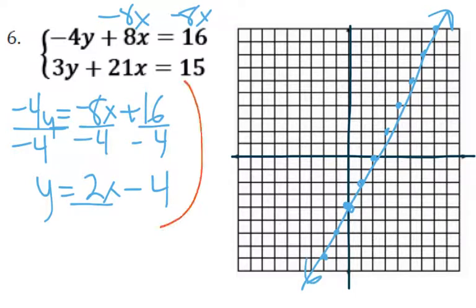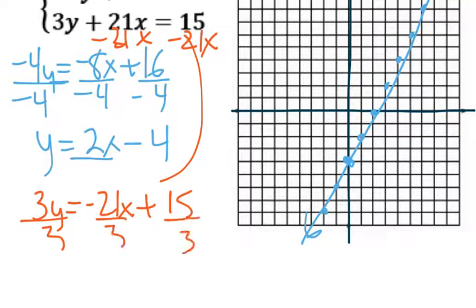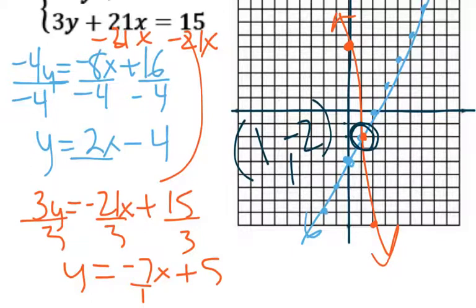There's my line. Second equation: subtract 21x, so 3y = -21x + 15. Divide by 3, and we get y = -7x + 5. So y-intercept of 5, then negative 7 over 1, so down 7 over 1. This one turned out a lot better. Our answer is right here, which is at (1, -2). If we wanted to, we could double-check it, but usually if it comes out nice like that, I don't worry about it.